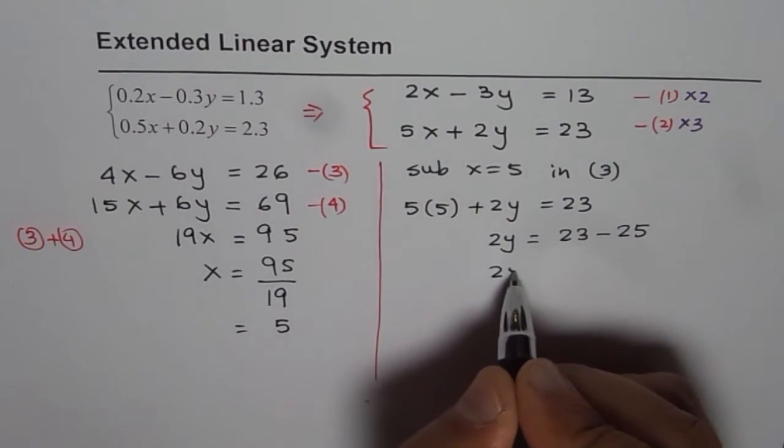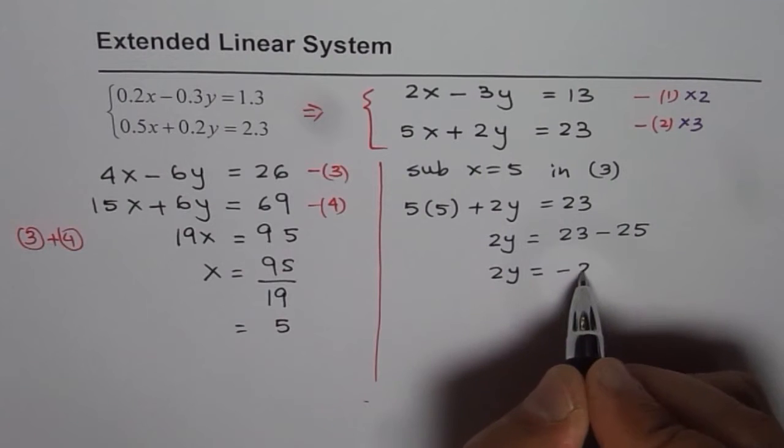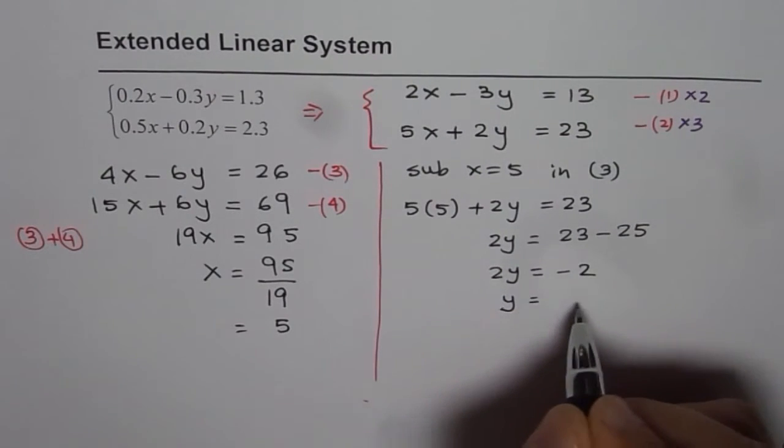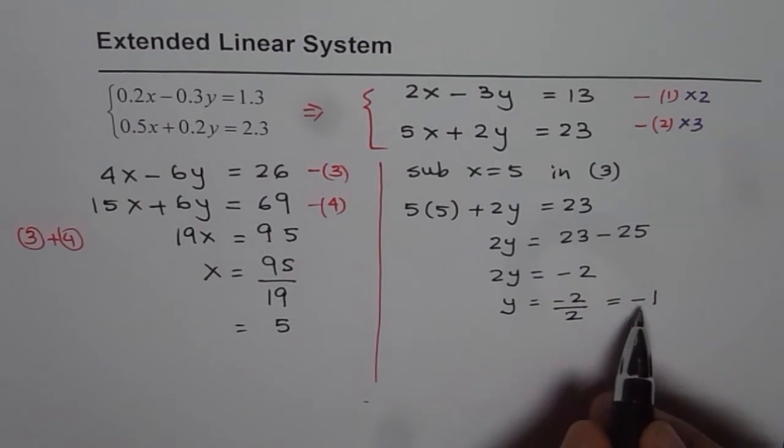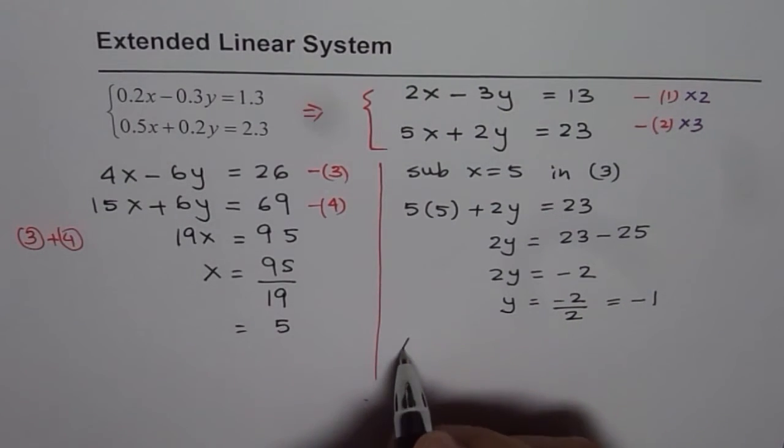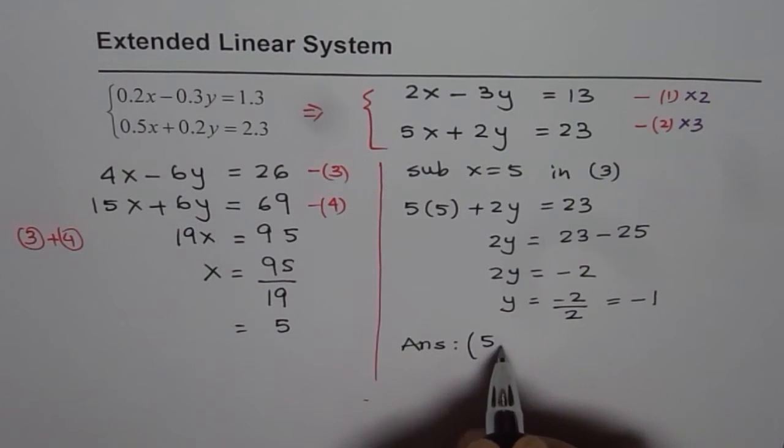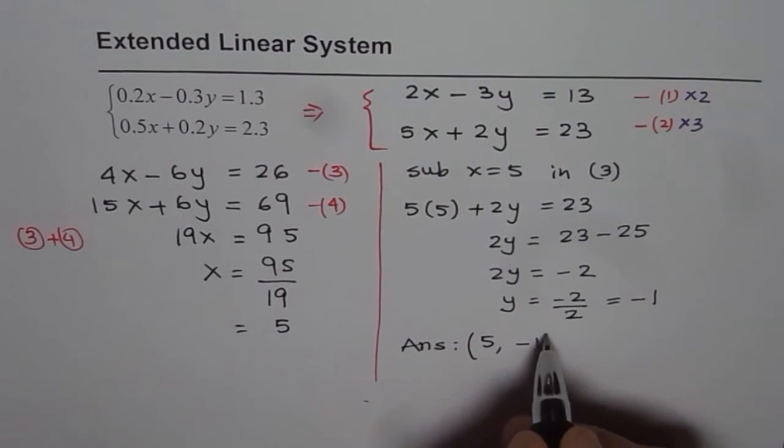So we have 2y equals to minus 2 and y equals to minus 2 divided by 2 that is equals to minus 1. So we get y value as minus 1. So now the answer is the x value is 5 and y value is minus 1. So that is the solution for our linear system.